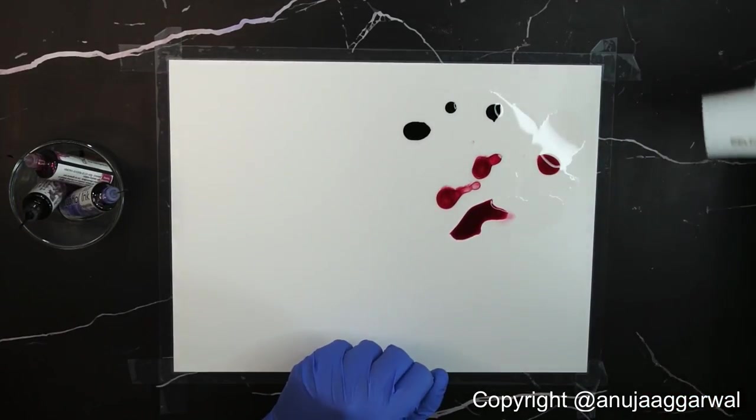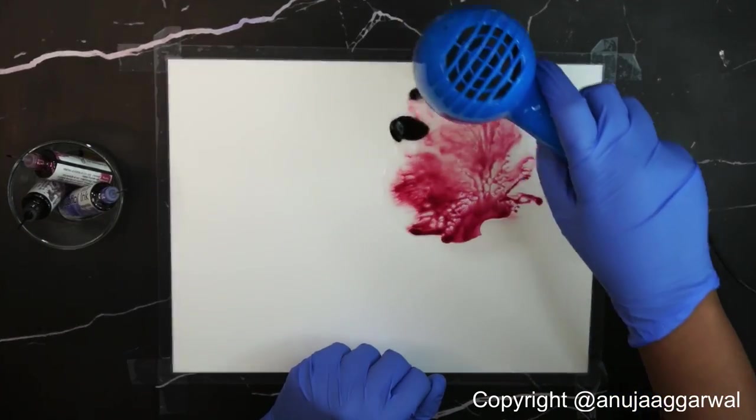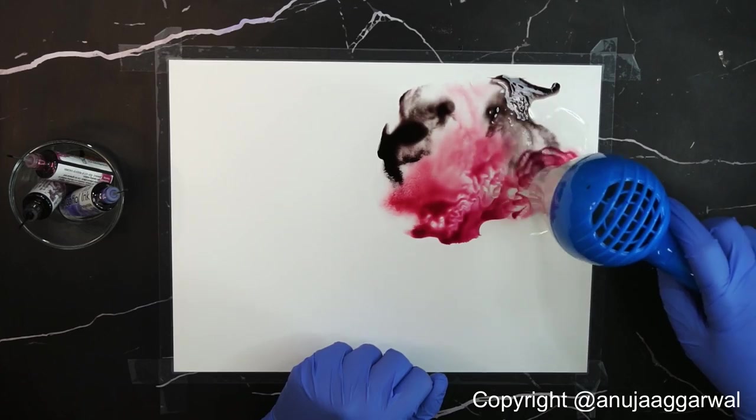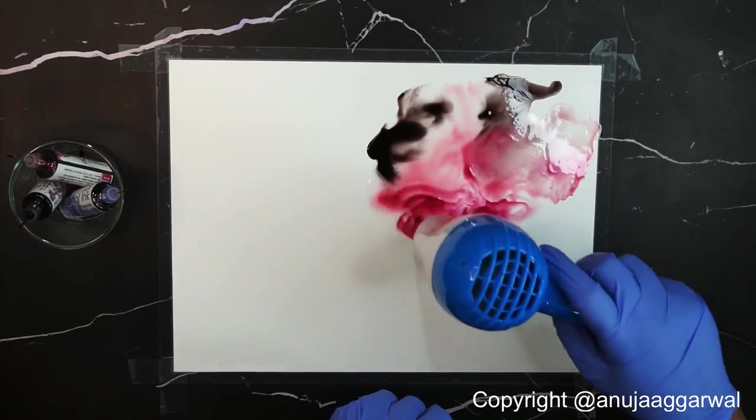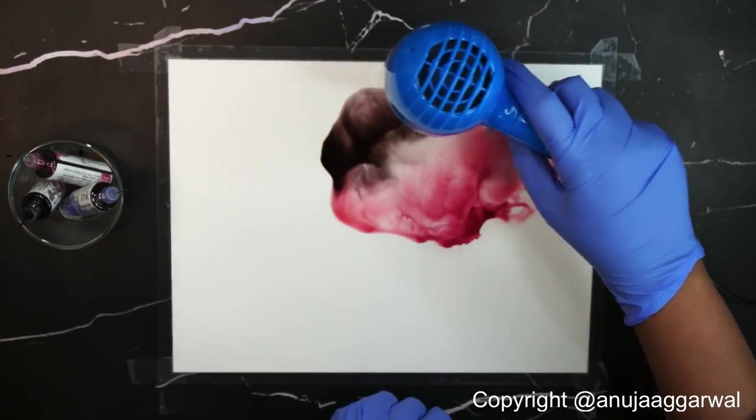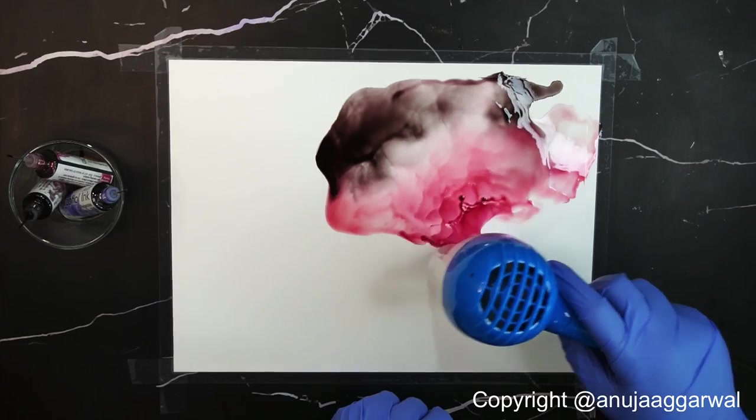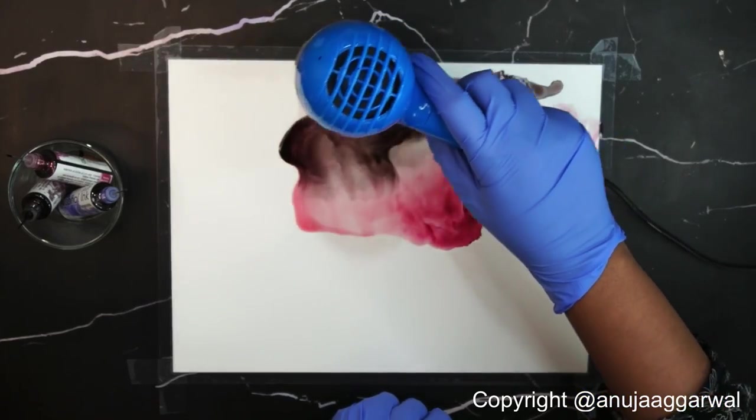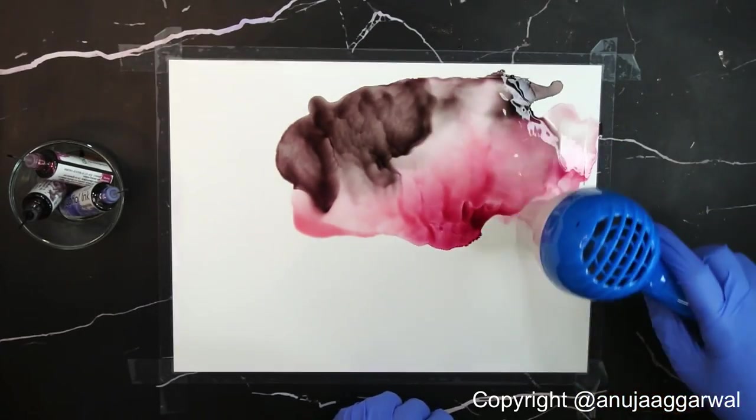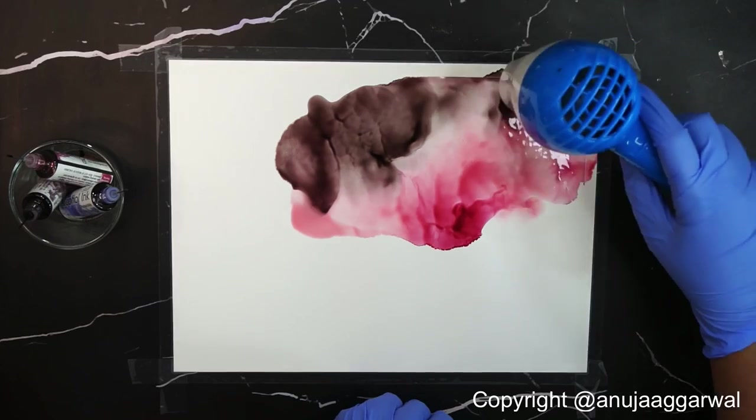I am using the pink and the brown shades and then just run your dryer over them any way you like. No plan, no thought going there, just dry it and let the inks do their magic.